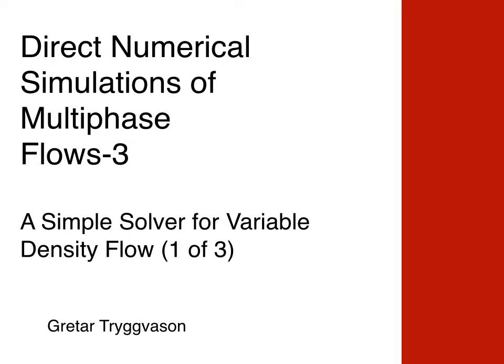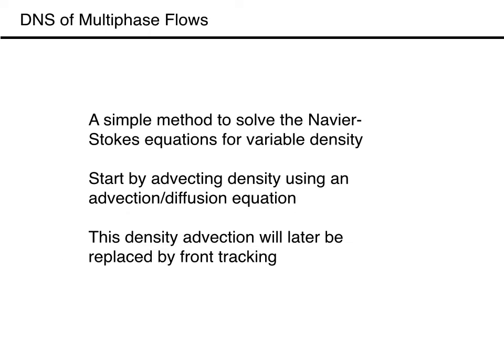Here we will develop a simple Navier-Stokes solver for incompressible flows of two fluids that have different material properties. The code is developed in several steps, adding capabilities in small increments. The code uses explicit time integration, implemented as the so-called projection method, and a regular structured staggered grid for a rectangular domain.